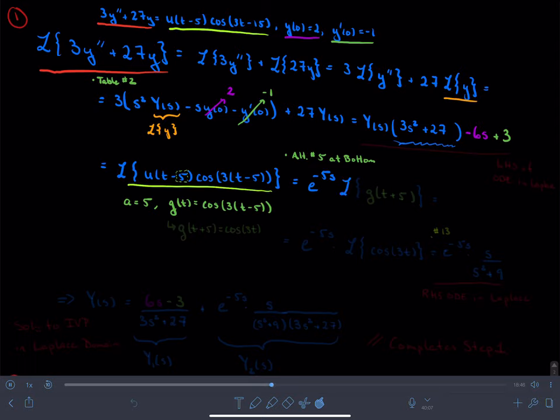Now, I must take the Laplace transform, not g of t, but g of t plus a. But my a here is 5, so I'm taking the Laplace transform of g of t plus 5.